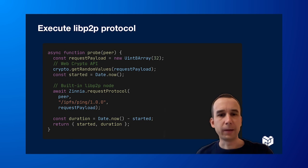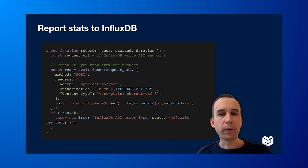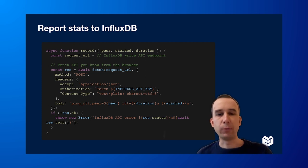Let's start by implementing the actual probe, where we dial a ping protocol, send some requests, and measure the latency of how long it takes. Then we write this measured data into InfluxDB using their HTTP API for submitting new data — and we can use the Fetch API, which you probably know from the browser.